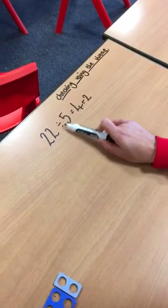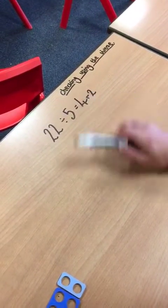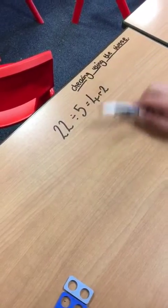To check that 22 divided by 5 is equal to 4 remainder 2, I'm going to have to do the inverse.